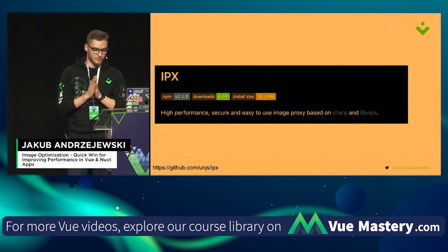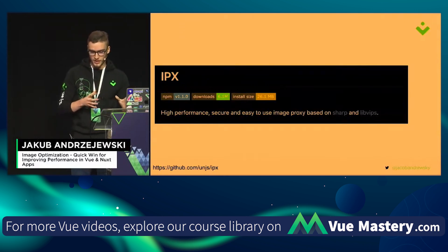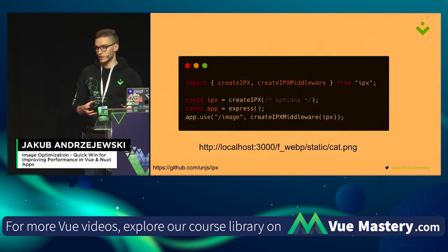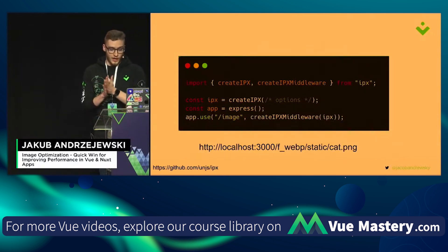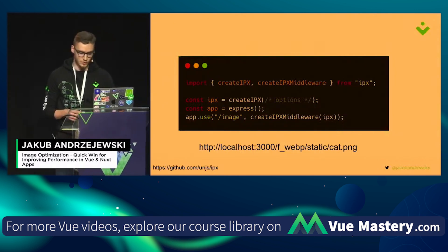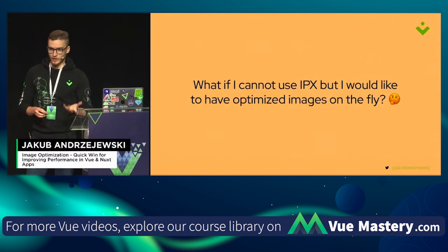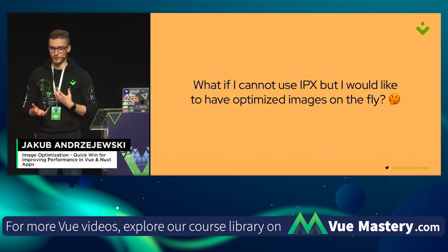The UnJS organization, if you don't know it yet, is where packages used across many different frameworks live — they are JavaScript/TypeScript only, so you can use them with Vue, React, and others. IPX is an image optimizer based on Sharp and libvips. It's really straightforward to use: you just install it and use it as an Express.js middleware or as the IPX client. You send requests to localhost with certain parameters — for example, the format, such as WebP. IPX is actually used internally by Nuxt Image, the widely-used module for handling images in the Nuxt ecosystem.